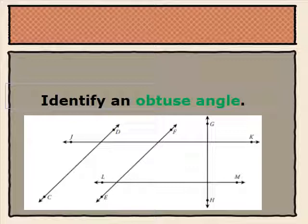The opening for an obtuse angle at the intersection of line JK and line EF. We know that this is an obtuse angle because it is greater than 90 degrees. The opening is larger than a right angle.